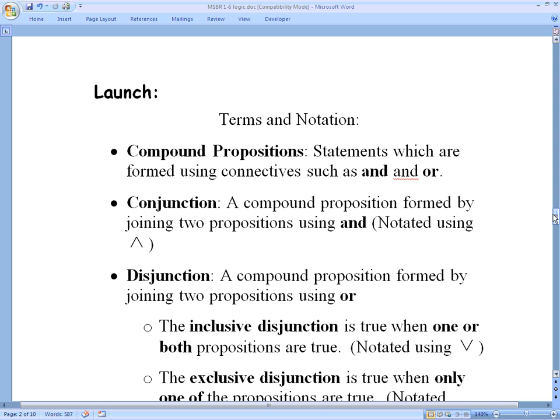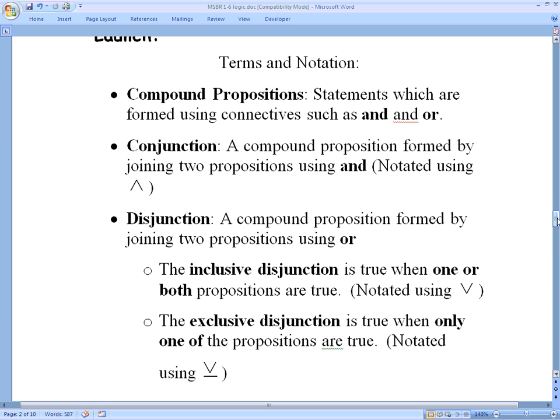So those are propositions. Now, just like in English class, when you have a statement, you can make compound statements or compound sentences. And we can do that here with our propositions as well. Compound propositions. Statements which are formed using connectives, such as and, and, or. Now, in English class, you have the word conjunction, and that means, and, or, or, but. Now, when we write in English, we can use but, which implies and.